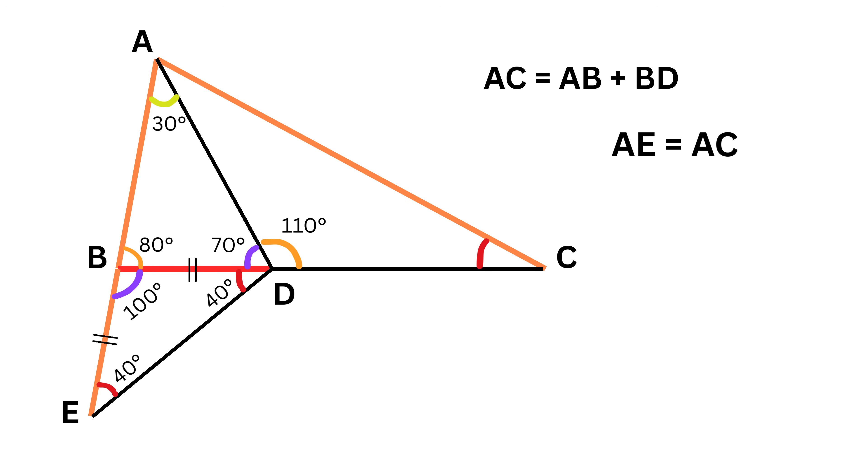Awesome! Next, we carefully look at the diagram again. On one side we see an angle of 110 degrees, and on the other side we see an angle made of 40 degrees and 70 degrees, which together also give 110 degrees.